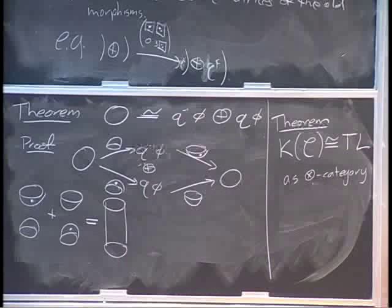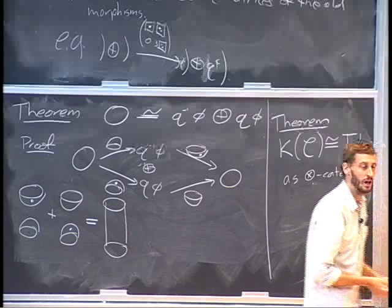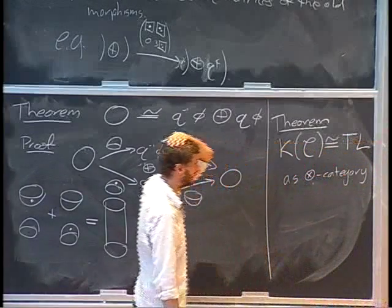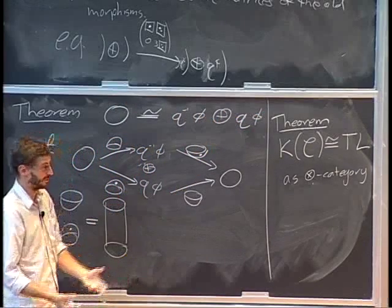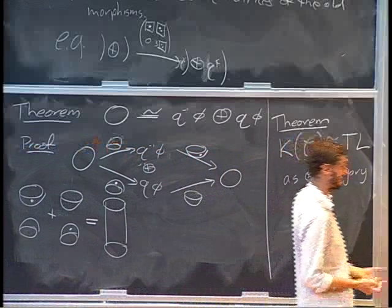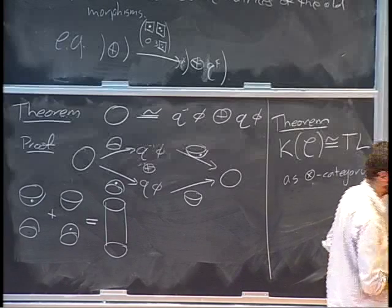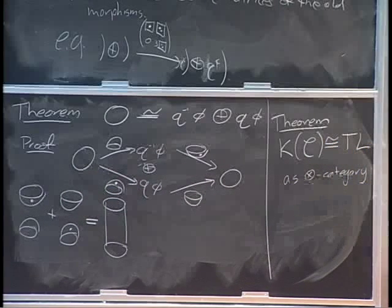Really we want to categorify Temperley-Lieb as a braided tensor category. But there's a little bit of a problem: the formulas for the crossings have negative signs in them, and so it's unclear what object in C we could associate to a crossing, because we can only take direct sums of objects — there's no direct minuses. The idea: it's hard to categorify a ring but easy to categorify a rig, and we have a real problem.